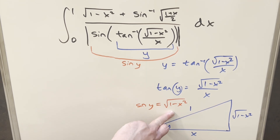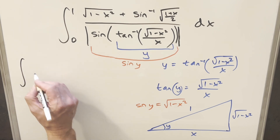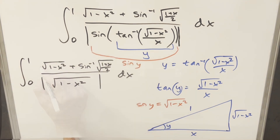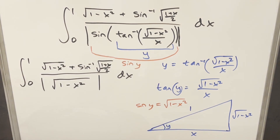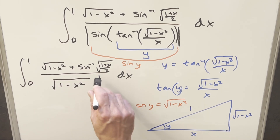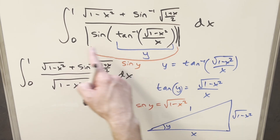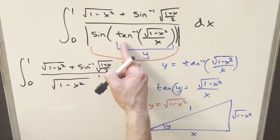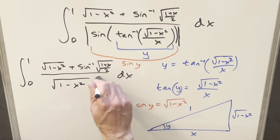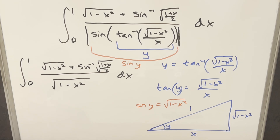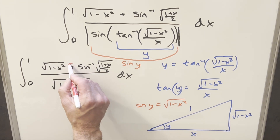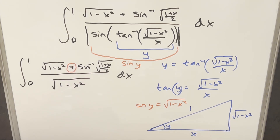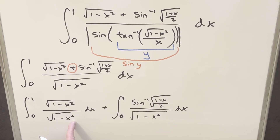Just like that we have quite a bit of simplification — I can plug in sin(y) = √(1 - x²) and rewrite the whole integral. Because we have a square root, this is always positive, so we can drop the absolute value. With x between 0 and 1, x is always positive, so we're in the first quadrant. Now with the plus sine term, we can break this up into two integrals, and the (1 - x²) terms cancel, leaving just 1 for that whole integral.